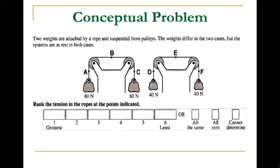So what's the correct answer on this one? From greatest to smallest, the greatest tensions would be A equals B equals C, which are all greater than D which is equal to E which is equal to F.